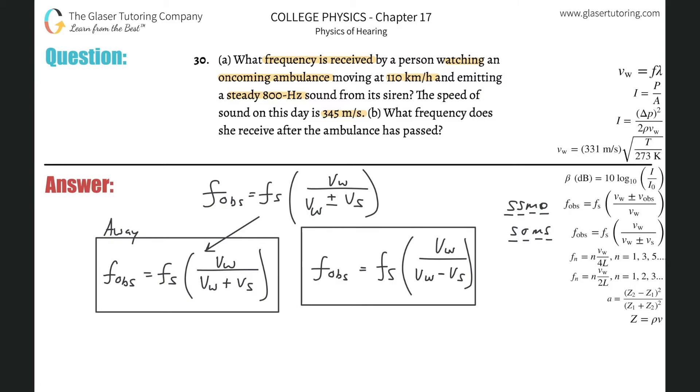So what are they asking us for now in terms of letter A? They're saying the ambulance is oncoming, meaning the ambulance is moving toward the observer and therefore I'm going to use this formula to calculate it. So now all I have to do is plug in the values. So frequency of the observer is going to be equal to the frequency of the source. They told us that the source is producing 800 Hertz. So 800 multiplied by the velocity of sound, so this is 345 divided by then the 345 minus now the velocity of the source.